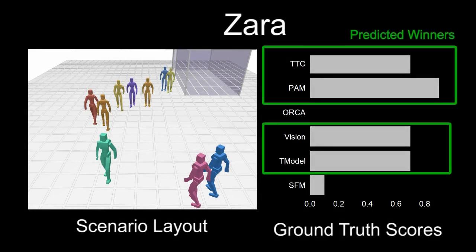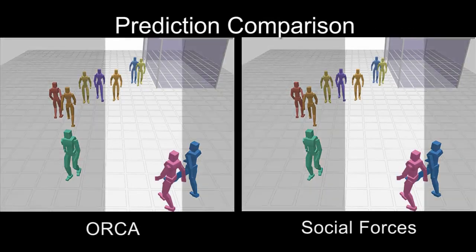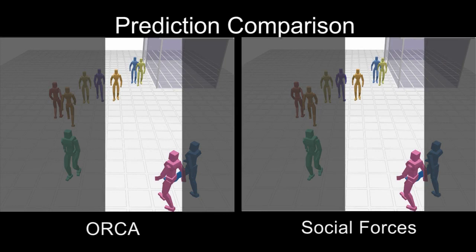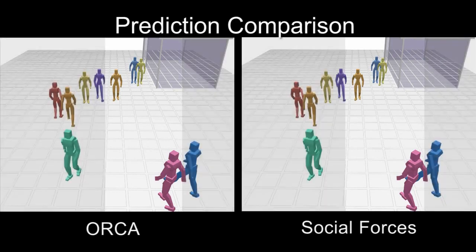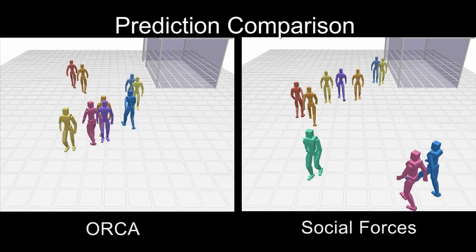In this scenario, four methods all match the data very closely, and all four are predicted as winners. In the highlighted region, you can see both of the losing methods have issues with the agents taking unnatural or colliding paths after a few seconds of simulation.